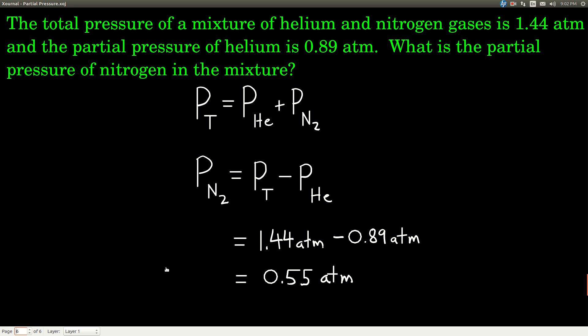We have a total pressure of 1.44 atmospheres in a mixture of helium and nitrogen, and we know the partial pressure of helium is 0.89 atmospheres. We want the partial pressure of nitrogen. Dalton's Law says total pressure equals partial pressure of helium plus partial pressure of nitrogen. Rearranging, partial pressure of nitrogen equals total pressure minus partial pressure of helium: 1.44 minus 0.89 atmospheres, giving us 0.55 atmospheres.